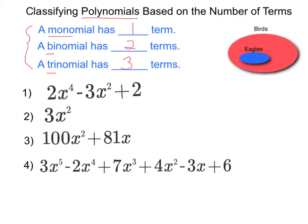If a polynomial has more than three terms, there's no specific label to refer to that. So we would merely call that one a polynomial.